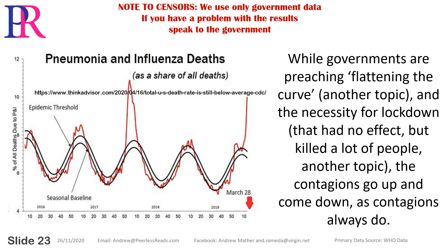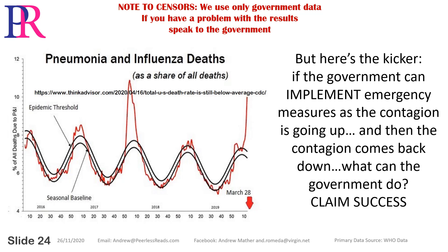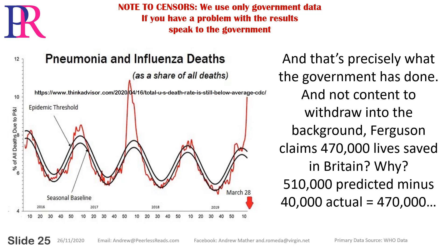While governments are preaching flattening the curve — another topic — and the necessity for lockdown that had no effect but killed a lot of people — another topic — the contagions go up and come down as contagions always do. But here's the kicker: if the government can implement emergency measures as the contagion is going up and then the contagion comes back down, what can the government do? Claim success.